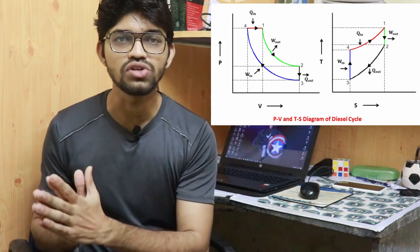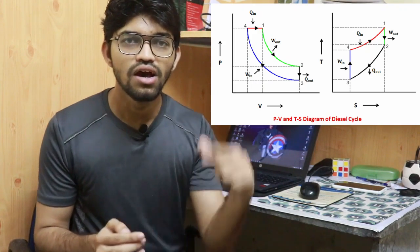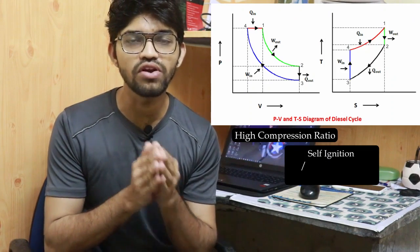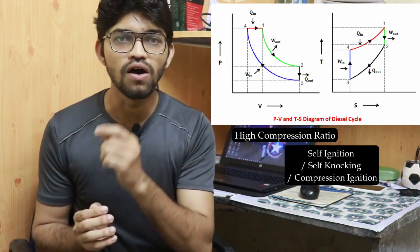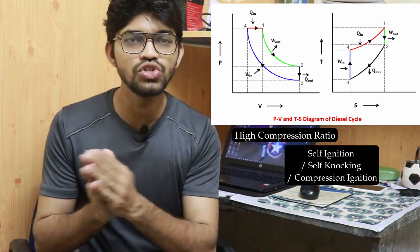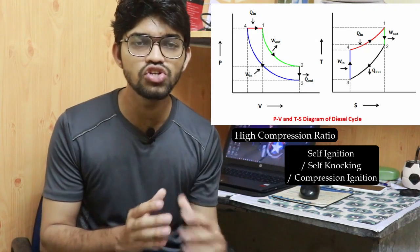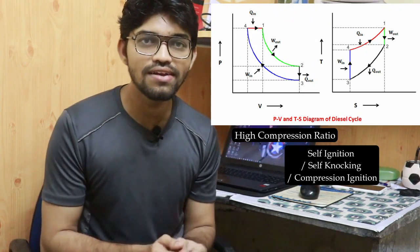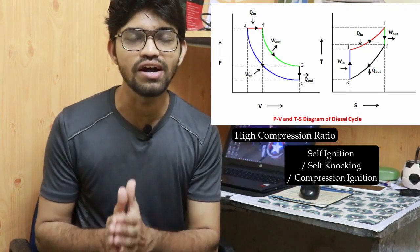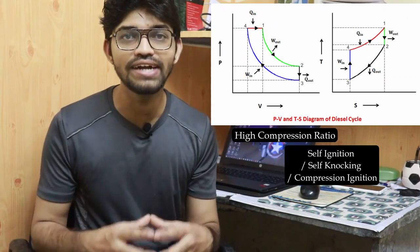The diesel cycle has a high compression ratio, which is why it is called a self-ignition or compression ignition (CI) cycle. Diesel engines are also referred to as CI engines because ignition occurs automatically. This is why the diesel cycle is used in heavy automotive vehicles such as railroads, heavy trucks, ships, and submarines. That covers the diesel cycle and diesel engine — please subscribe to Engineers Academy for more content.